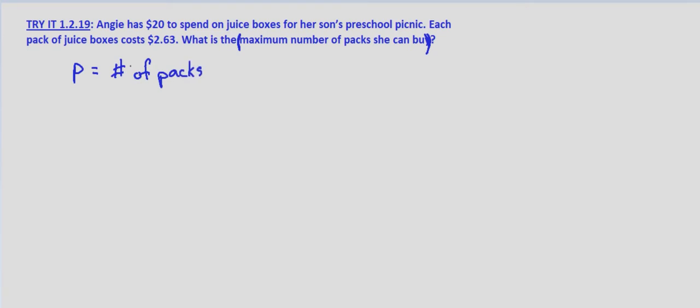So what are we told? We're told each pack costs $2.63. So $2.63 per pack times the number of packs is at most the amount of money that Angie has, which is $20. Now, how do we translate that into an inequality?